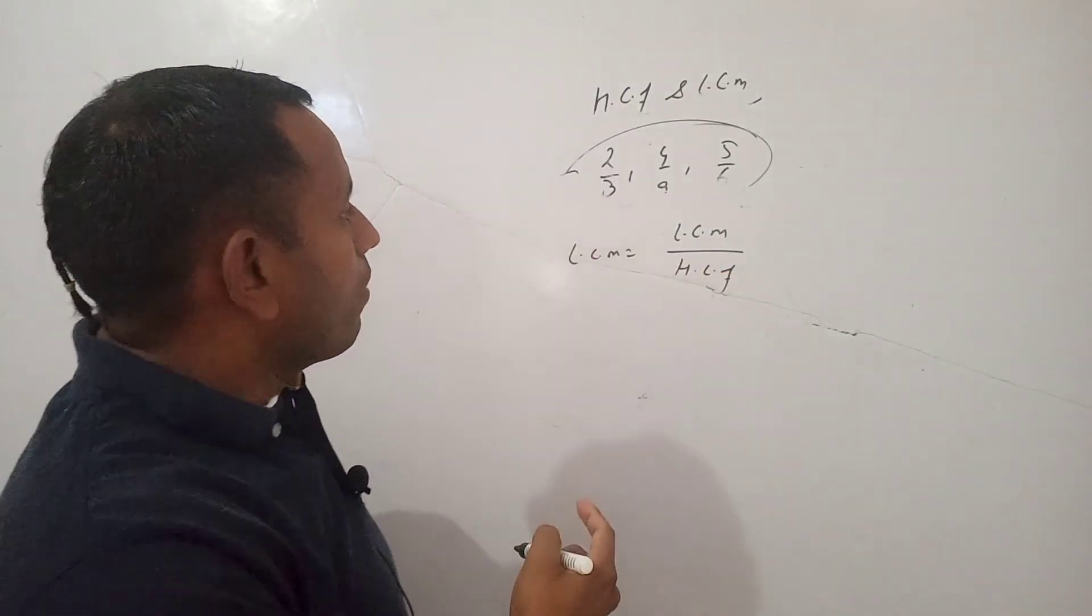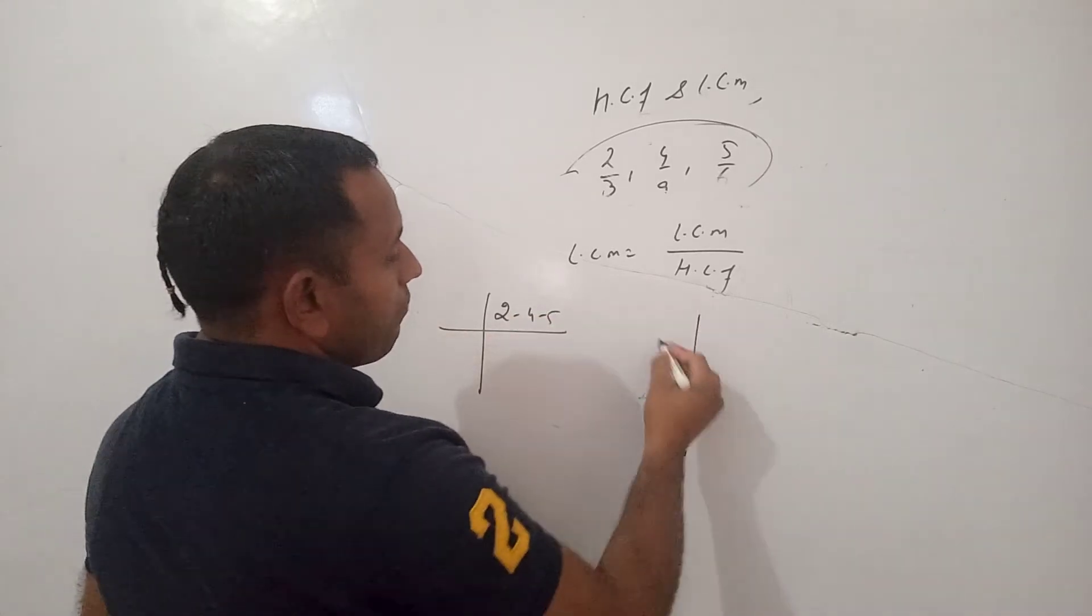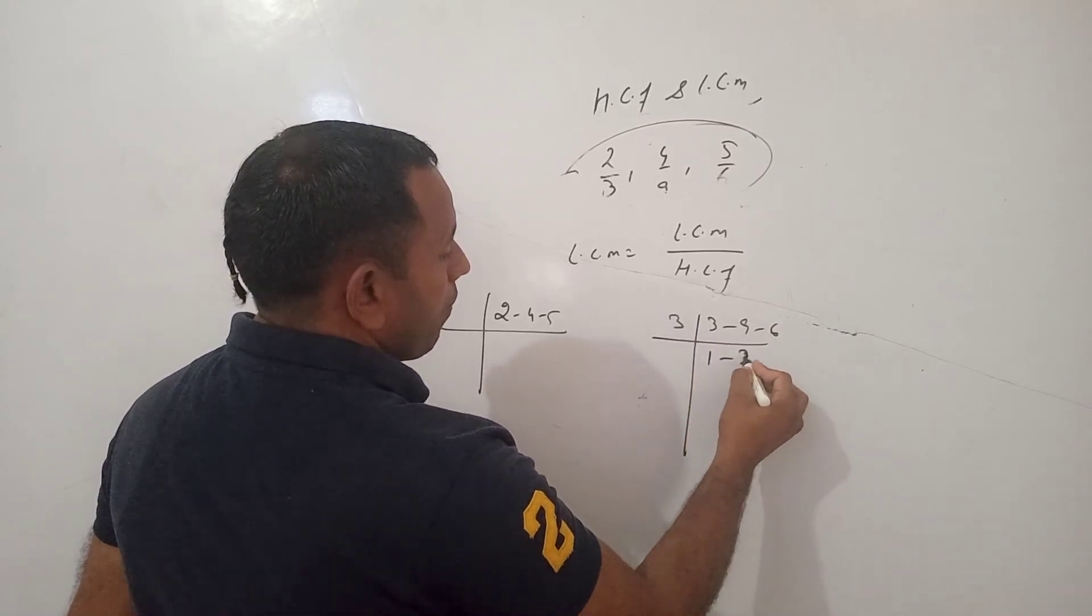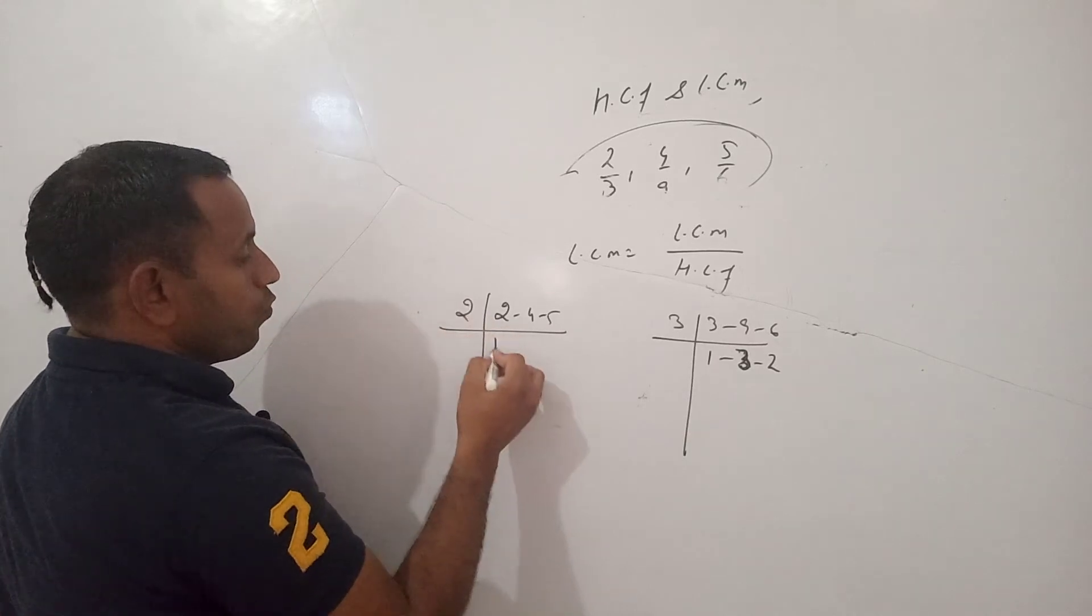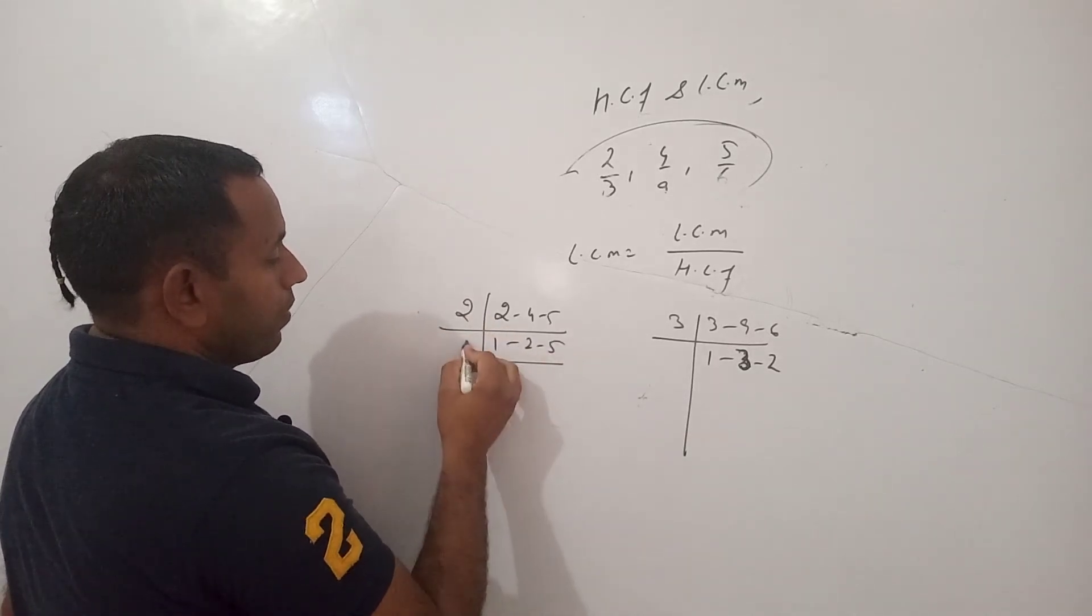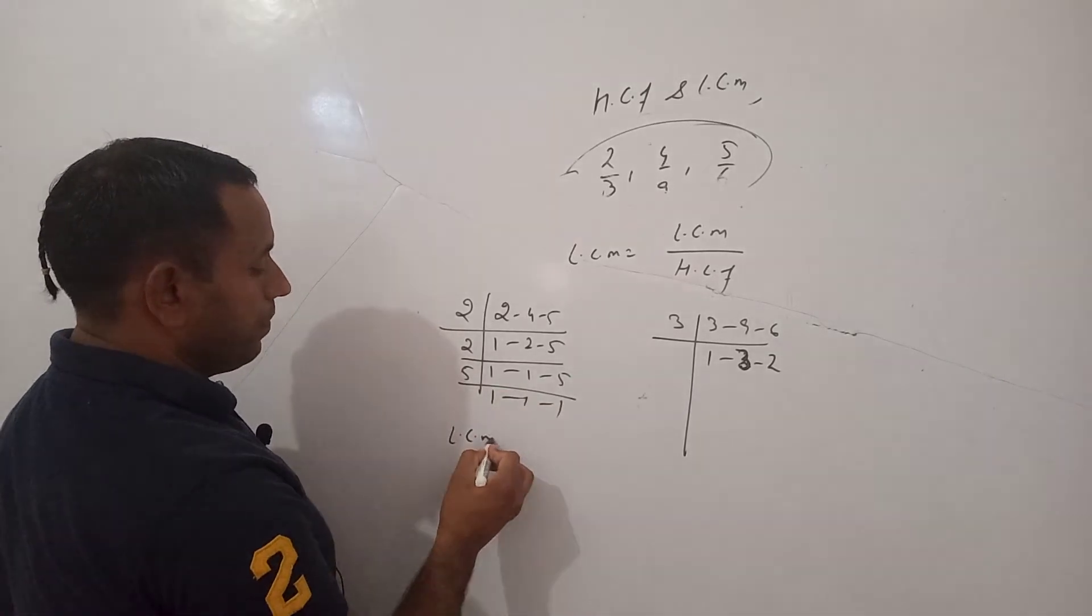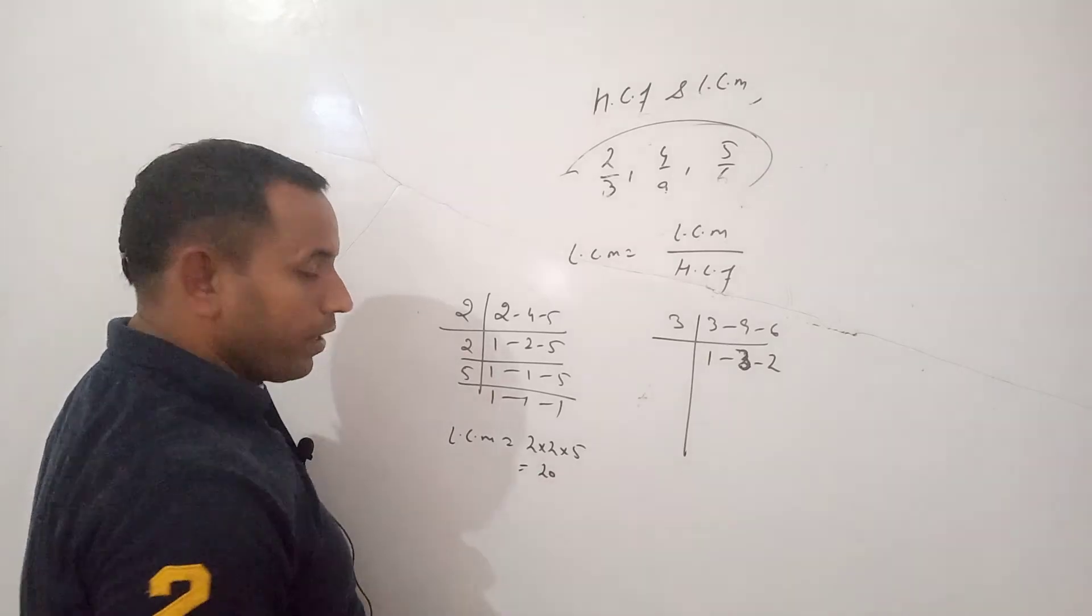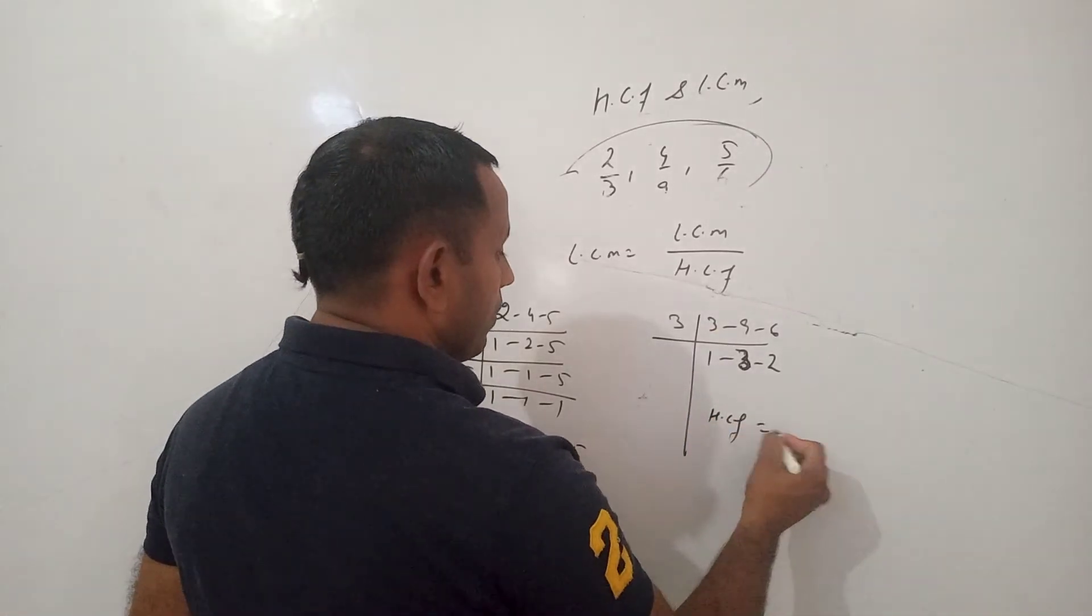So now find out the LCM of 2, 4 and 5, and HCF of 3, 9 and 6. That is 3, 3, 9 and 3, 2, 6 and this is 2, 1, 2, 2, 2, 4 and again that is LCM is 2 into 2 into 5. It means 20 and HCF is 3.